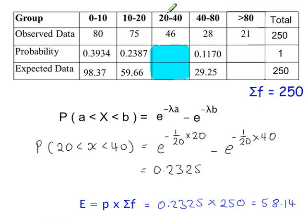Calculating the probability for x between 20 and 40: 0.2325, and that lambda value there is 1 over 20. So the expected value that goes here is this probability times the total frequency 250, so 58.14.